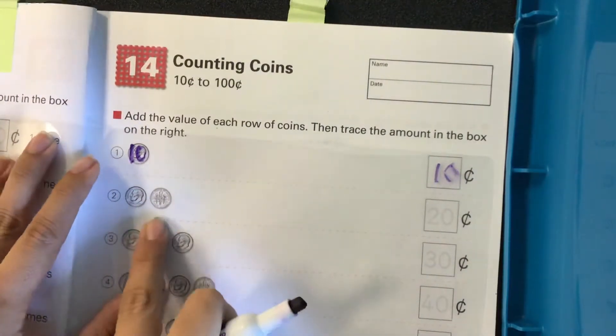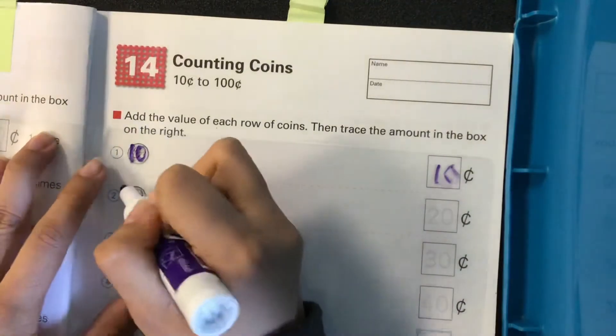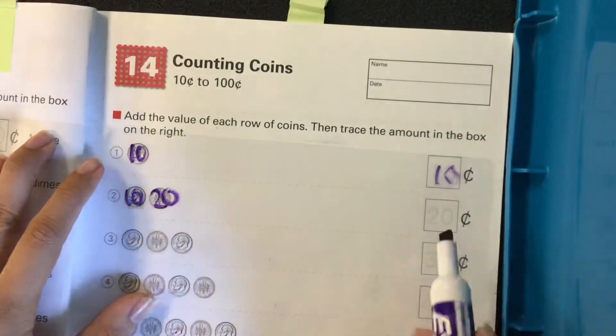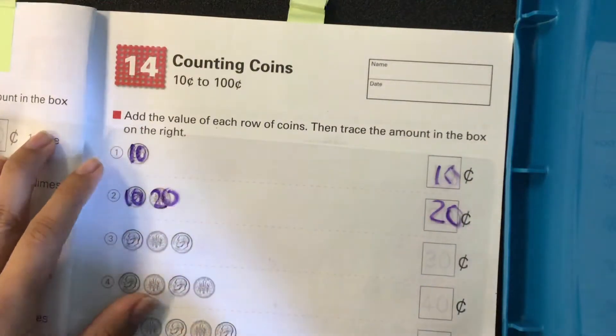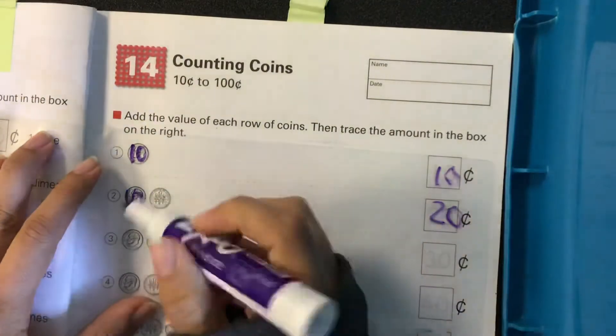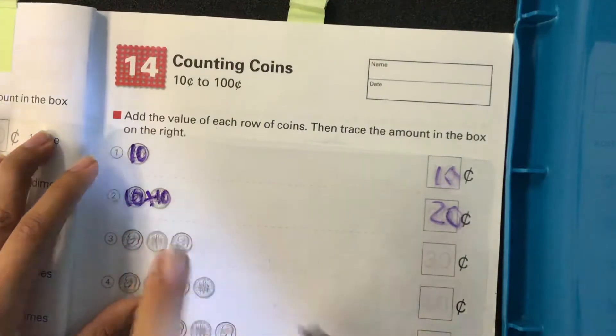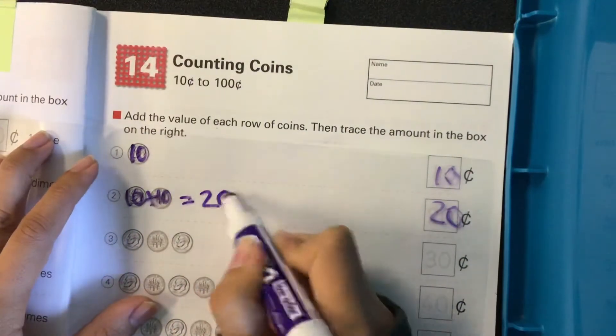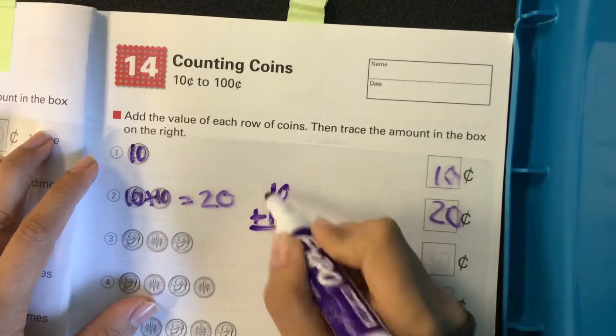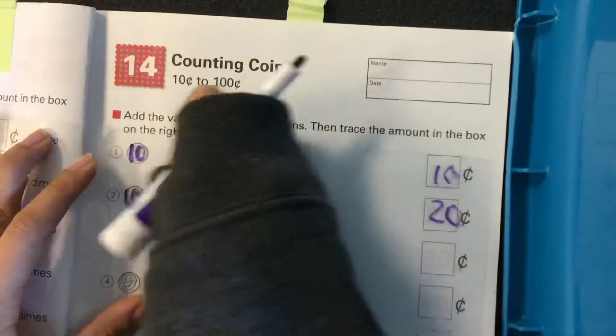Here we have two dimes so we can start skip counting by tens. We can do ten, twenty and know that there are twenty cents in that row. But if you don't like to skip count we can also add. We know each dime is worth ten cents so we can add them. Ten plus ten equals twenty. Or you can do it this way: ten plus ten, one, two, twenty. So we can do both skip counting and adding.